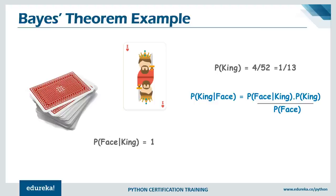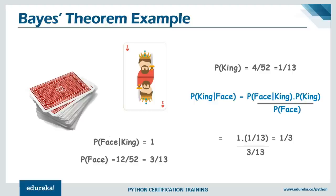Since there are three face cards in each suit — the jack, king, and queen — the probability of a face card is 12/52, which is 3/13. Using Bayes' Theorem we can find the probability of king given that it's a face card, and our final answer comes to 1/3, which is also logically true. If you have a deck containing only face cards, there are three types — jack, king, and queen — so the probability that it's a king is 1/3. This is a simple example of how Bayes' Theorem works.